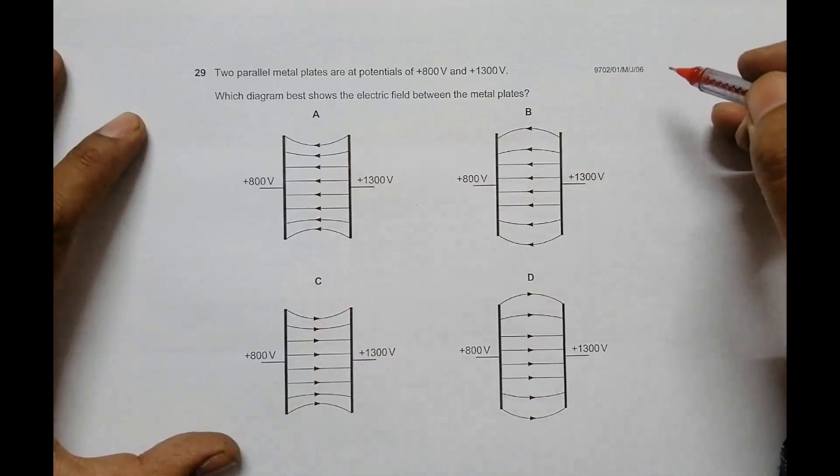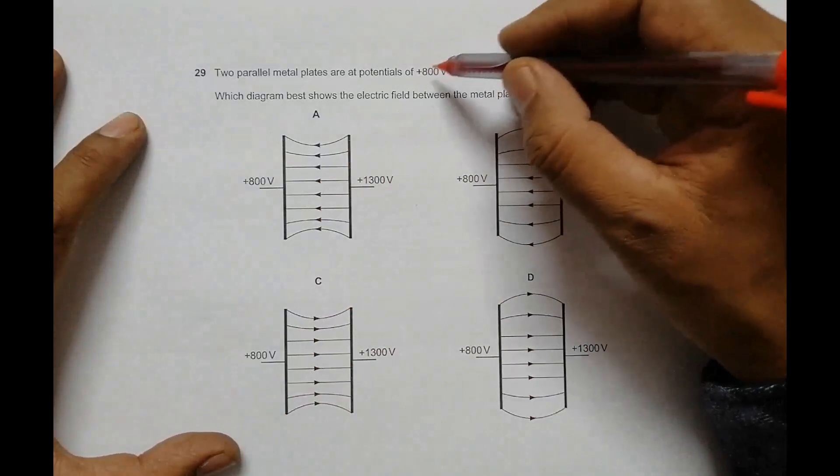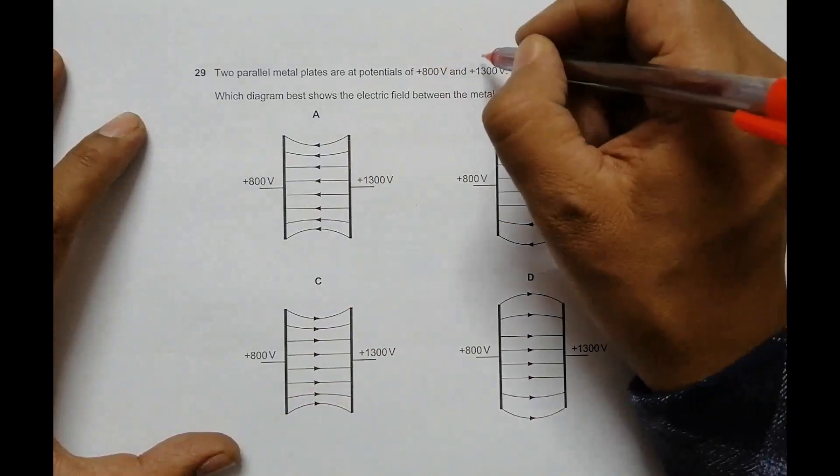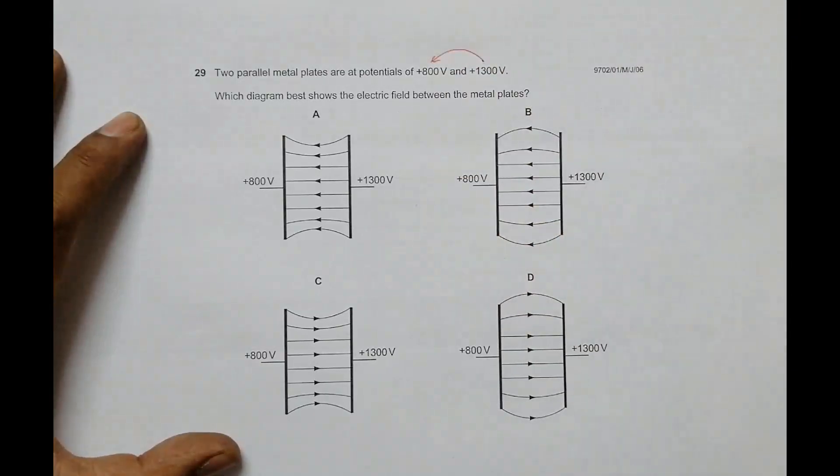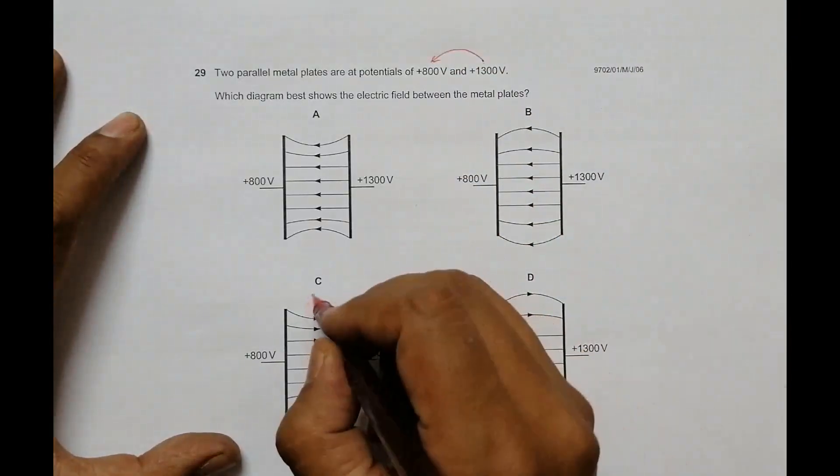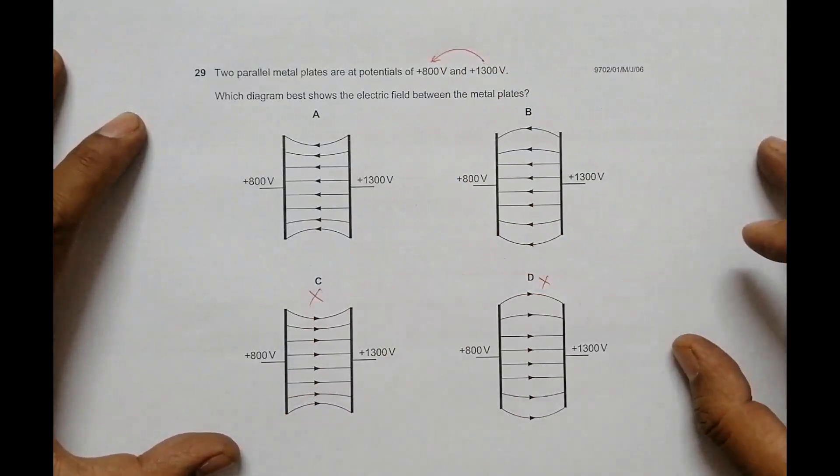One thing to remember is that since one plate is at higher potential and the other at lower potential, both positive, the lines of force should go from higher to lower potential. With this requirement, choice C and choice D are disqualified because they show lines of force going in the wrong direction.